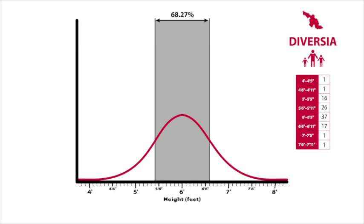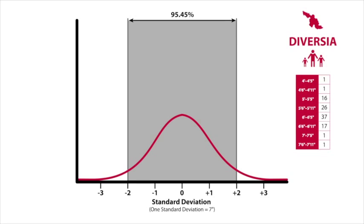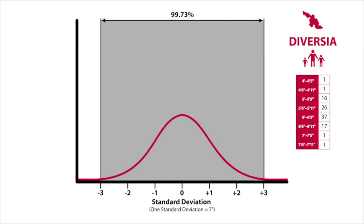That is, between 5 foot 5 inches and 6 foot 7 inches. 95% falls within plus or minus two standard deviations, between 4 foot 10 inches and 7 foot 2 inches. And 99% falls within plus or minus three standard deviations, between 4 foot 3 inches and 7 foot 9 inches.